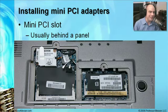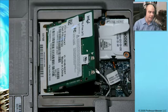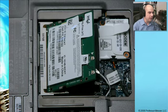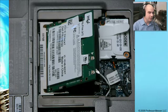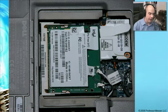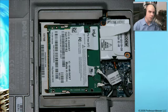Installing mini-PCI adapters is almost exactly the same process — usually behind a panel. Here we have an empty mini-PCI slot. Let's say we want to add wireless capability. The laptop is already designed for it; there are antenna wires ready to go that run all the way up into the top of the laptop and into the screen. We slide the card in the same way as memory — there are notch markings so it can't go in the wrong way. Push it down and it snaps into place. The card has connectors for the main and auxiliary antenna wires, which are labeled. If unsure, consult the manufacturer's documentation.